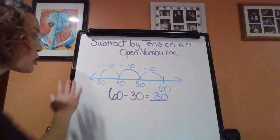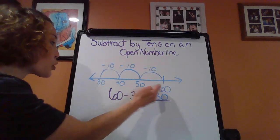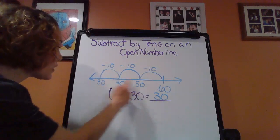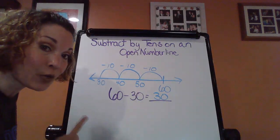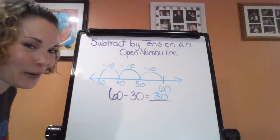So notice how we're still showing all that work. We're showing how many hops back because of the number of 10s. We're showing how we are progressing and counting backwards. Notice how those numbers are decreasing because we are subtracting. All right. You ready for one more sample? Here it comes.